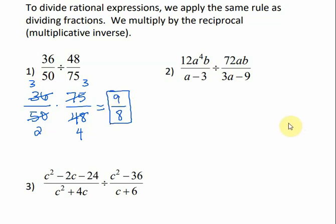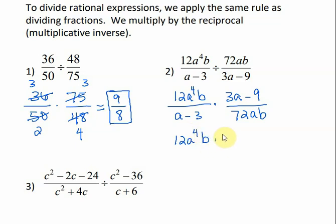Now let's try it with polynomials. Leave our first fraction just like it is, change it to multiplication, and flip the second one. Now let's see if we can factor anything. This is a monomial. This is a binomial, but there's no greatest common factor. This is a monomial, this is a binomial, and it has a greatest common factor of 3. So we can factor out the 3. And I would be left with A minus 3.